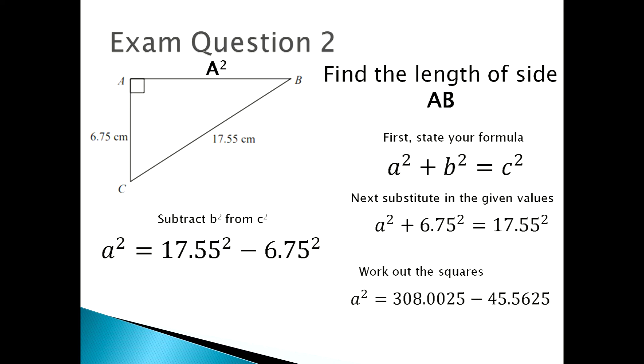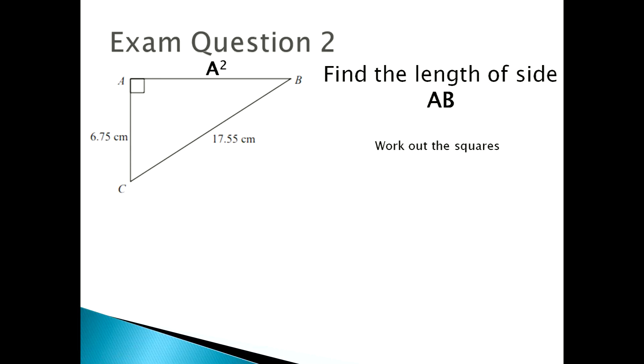After you've worked out your squares, you need to subtract your squares. And a squared equals 262.44. Afterwards, you square root the number that you've gotten, which is 262.44. And then a equals 16.2, which means that side AB is 16.2.